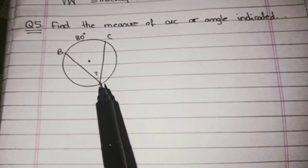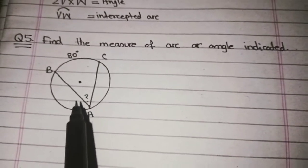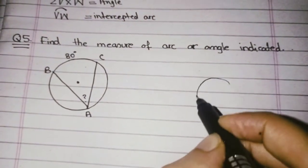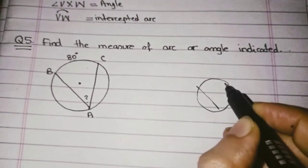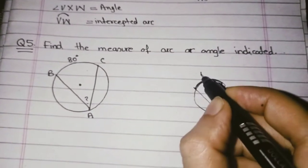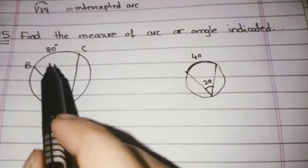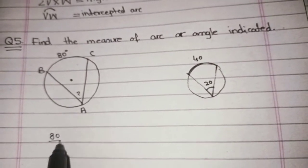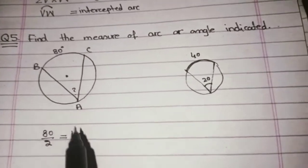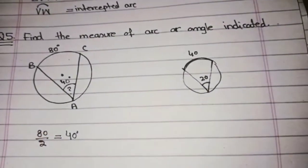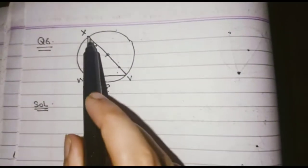We have question number 5: find the measure of the arc or angle indicated. This is an inscribed angle, and we know that the intercepted arc is double the inscribed angle. For example, if the inscribed angle is 20°, the intercepted arc is 40°. So if the arc is 80°, the inscribed angle will be half of 80°. Dividing 80 by 2 gives 40, so this inscribed angle equals 40 degrees.